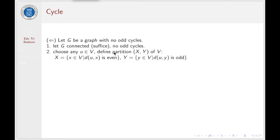Now we prove from right to left. Let G be a graph with no odd cycles. In this case, we suffice to assume that G is connected and has no odd cycle. Choose any vertex U in G, and define partition X and Y as follows: X is the set of all vertices with distance even from U, and Y is the set of all vertices with distance odd from U. Now we are going to show G is bipartite.